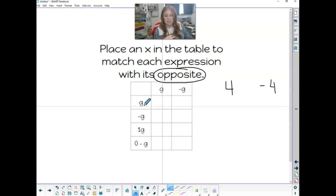So let's say g is 4. If g equals 4, the opposite of 4 would be a negative. So this one needs to be negative.